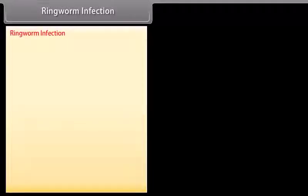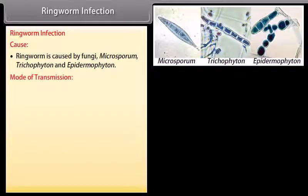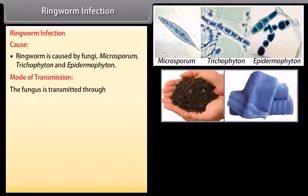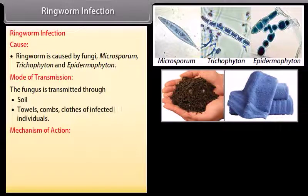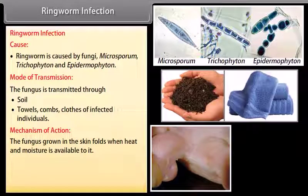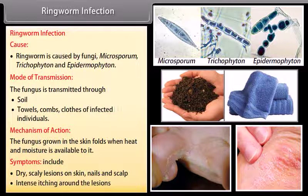Ringworm infection is caused by fungi — Microsporum, Trichophyton, and Epidermophyton. The fungus is transmitted through soil, towels, combs, and clothes of infected individuals. The fungus grows in the skin folds when heat and moisture are available. Symptoms include dry scaly lesions on the skin, nails, and scalp, and intense itching around the lesions.